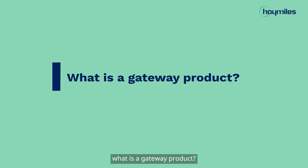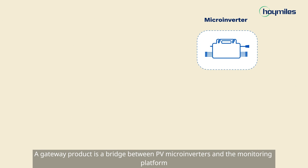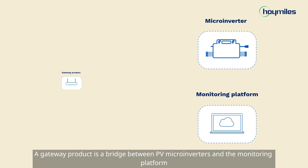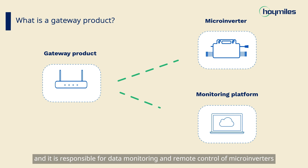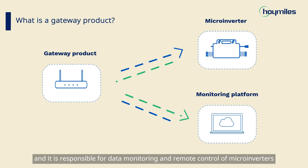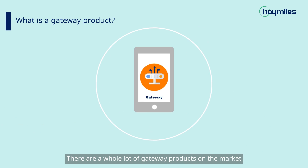The first question: what is a gateway product? A gateway product is a bridge between PV micro inverters and the monitoring platform, and it is responsible for data monitoring and remote control of micro inverters.